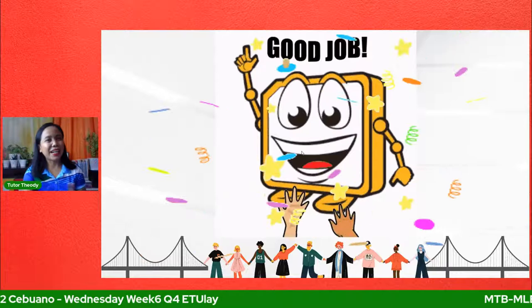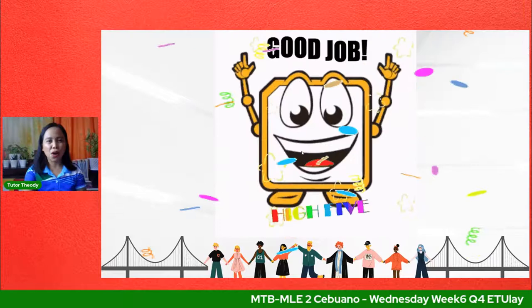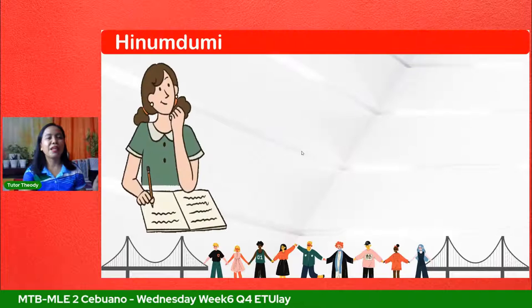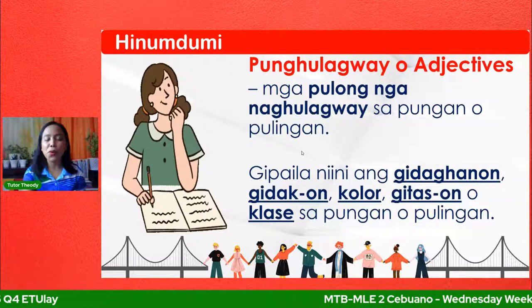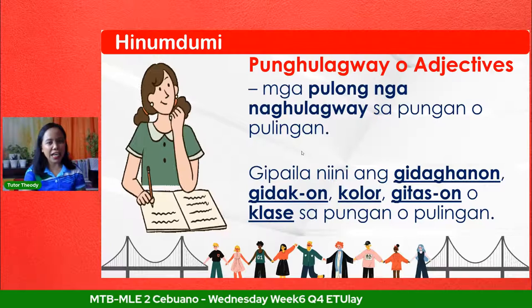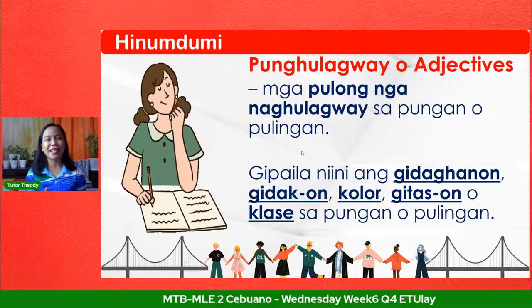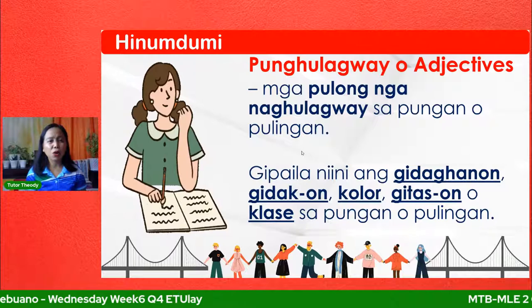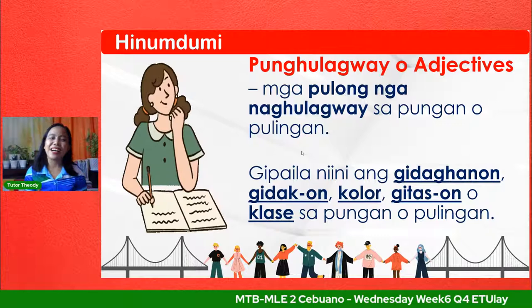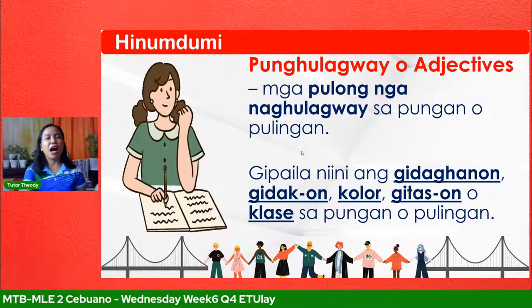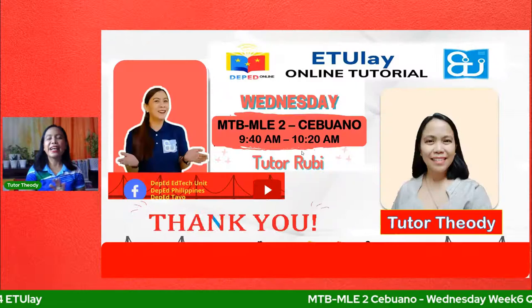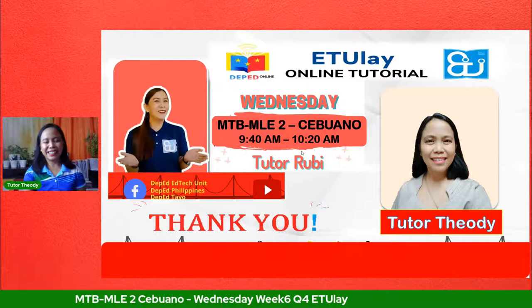Maghinaot ako na madaghan kamu nakatunan garod. Inyong nagayun na hibaluan ang punghulagway. Makailan na kamu sa punghulagway? Atong hinumduman na ang punghulagway o adjective mao ang mga pulong na naghulagway sa pungan o pulingan. Kipailan niining ang kitaganon, kitakon, pulor, kitason, o klase sa pungan o pulingan. Hinumduman ka na nato mga bata para makakita-kita o mga pulong makakilan na kita kung hulagway baki ni o dili. Daghang salamat sa inyong pagpaminaw, sa inyong pag-uban karun karong buntaga. Muli, ako si Tutor Judy — nag-ingungan ninyo, daghang salamat! Happy learning!